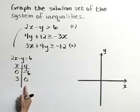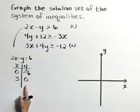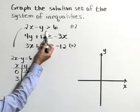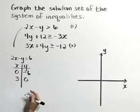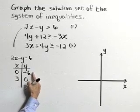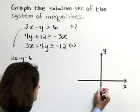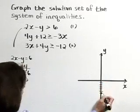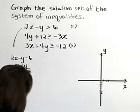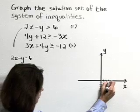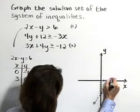As we graph this boundary line, we're going to use a dotted or dashed line because our inequality statement is a strict inequality — 2x minus y is greater than 6. So this graph goes through the point (0, negative 6), that's down 6 on the y-axis, and also through the point (3, 0), that's over 3 on the x-axis.